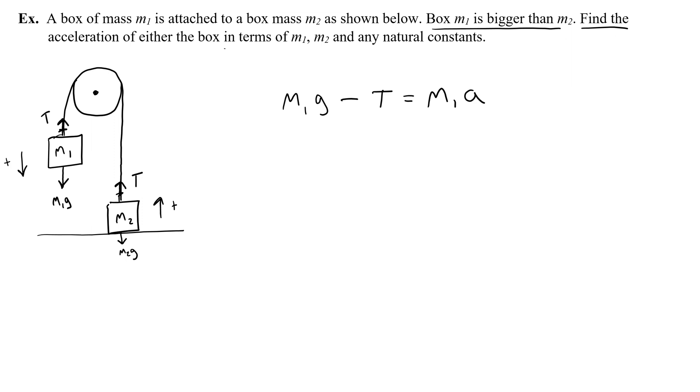That's the first equation. The second equation is going to come from the fact that T is now pointing up in the positive direction. So I write T as positive then minus the weight m2 G because the weight is pointing down which now is in our negative direction. So this is equal to m2 times A. And I have my system of equations.